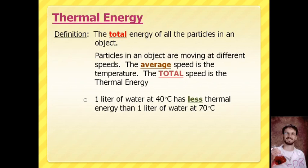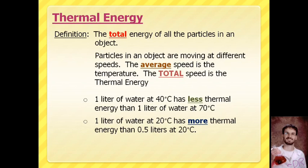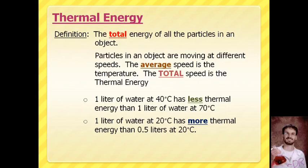What if we have the same temperature but change the volume? A liter of water at 20 degrees Celsius — room temperature, about 70 degrees Fahrenheit — compared to half a liter at the same temperature: the liter has more thermal energy. The particles are moving the same speed, but in the larger volume there are more particles, so when you add them all together you get a greater total thermal energy.